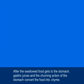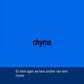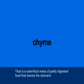After the swallowed food gets to the stomach, gastric juices and the churning action of the stomach convert the food into chyme, which then exits the stomach and travels to the small intestine. Chyme, spelled C-H-Y-M-E, is a semi-fluid mass of partly digested food that leaves the stomach.